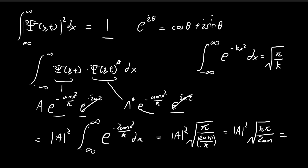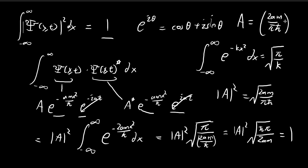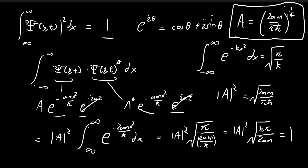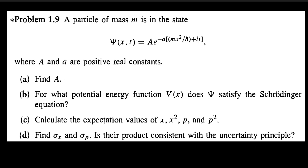Substituting the result and simplifying — moving ℏ-bar to the top — we set this entire expression equal to 1 since we're normalizing the wave function. This lets us deduce that |A|² equals the square root of 2am divided by πℏ-bar. A can in principle be complex, but we choose the simplest real form, so A equals (2am / πℏ-bar) to the power of one-quarter. With A chosen this way, the wave function is normalized.